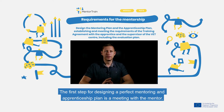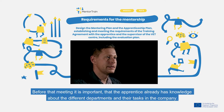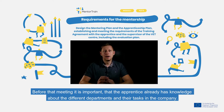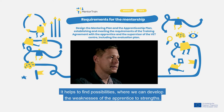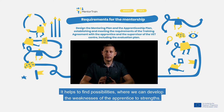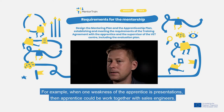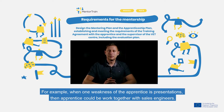The first step for designing a perfect mentoring and apprenticeship plan is meeting with the mentor. Before that meeting it's important that the apprentice already has knowledge about different departments and their tasks in the company. It helps to find possibilities where we can develop the weaknesses of the apprentice into strengths. For example, when one weakness of the apprentice is presentations, then the apprentice could work together with sales engineers.